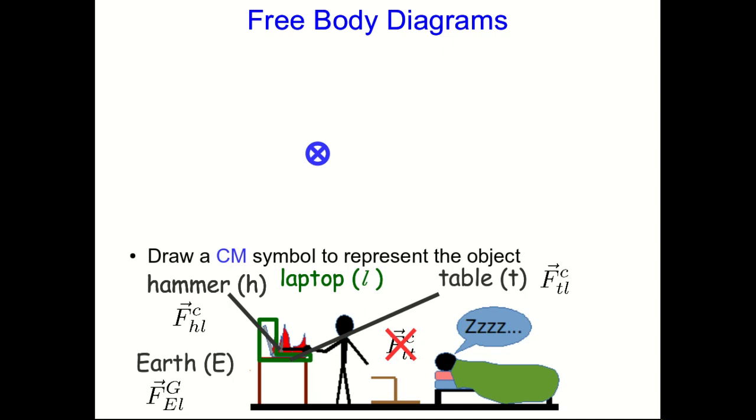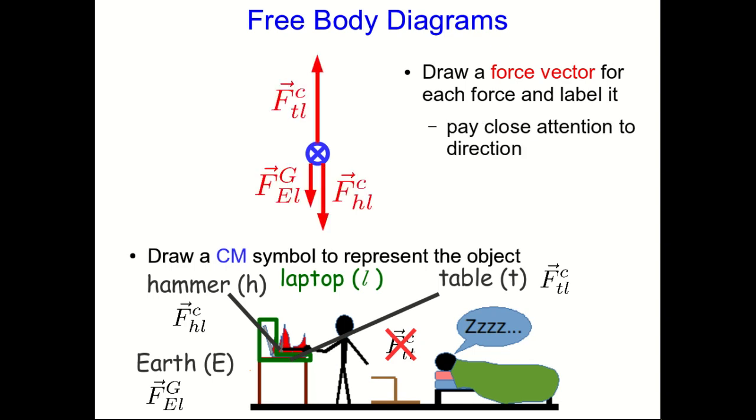Next, draw a center of mass symbol to represent the object. Remember, we're thinking of the object as a point. It doesn't matter where on the object the forces act. It won't affect the translational motion. And so we don't want to be distracted by where on the object the forces act. So we'll represent it as a center of mass symbol. Now draw the force vector for each force that you've already identified, and label it. Pay close attention to direction. If you know some force is bigger than another, you might as well draw it that way. But now isn't really the time to be worrying about how big these forces are. Just get them pointed in the right direction.